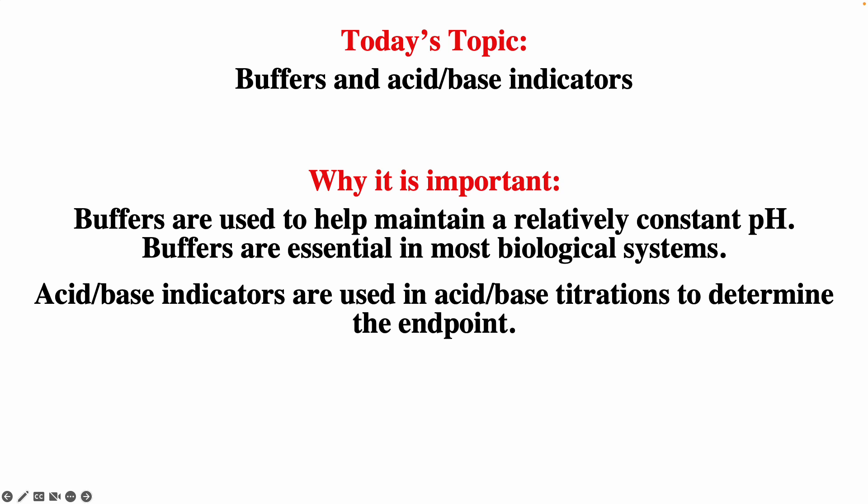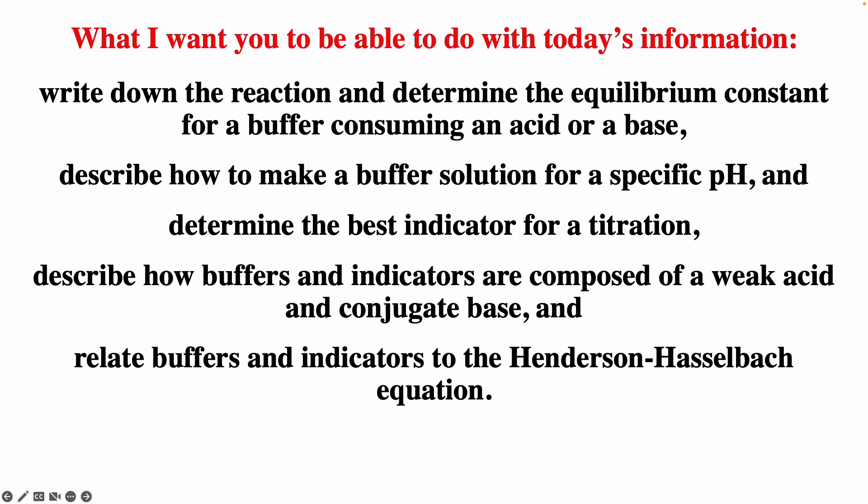Acid-base indicators are used in acid-base titrations to determine the endpoint. After watching this video, you should be able to write down the reaction and determine the equilibrium constant for a buffer consuming acid or base. You should be able to describe how to make a buffer solution for a specific pH, determine the best indicator for a titration, describe how buffers and indicators compose a weak acid and conjugate base, and relate buffers and indicators to the Henderson-Hasselbalch equation.